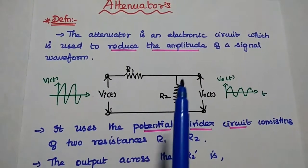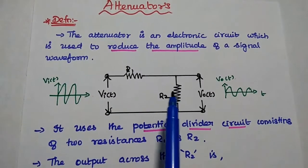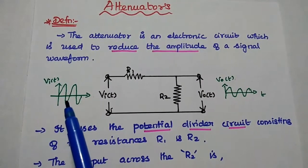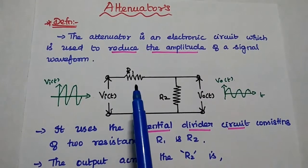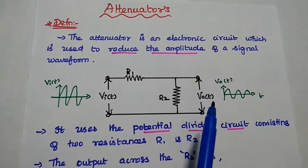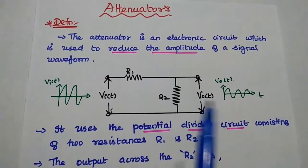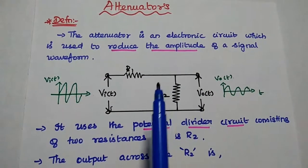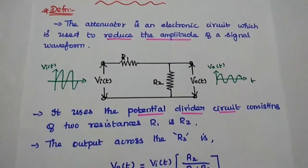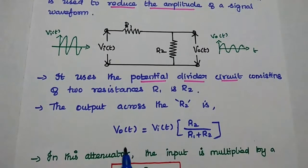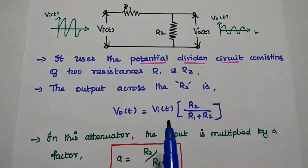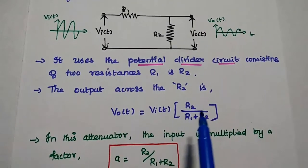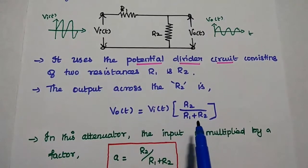Here we can have the resistor arrangements like this. We can give the input Vi(t) to this R1 and we can take the output Vo(t) across this R2. This potential divider circuit provides the output Vo(t) equals Vi(t) multiplied with R2 by R1 plus R2.